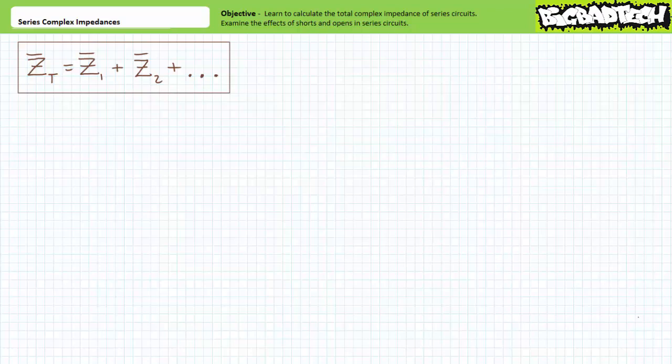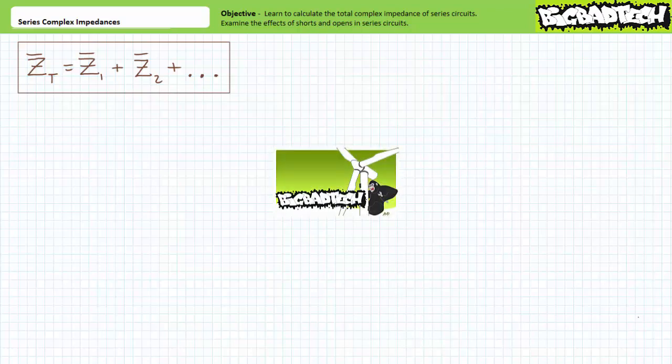Good day and welcome to Big Bad Tech. I'm your instructor Jim Pytel, and today's topic of discussion is series complex impedances. Our objective is to learn to calculate the total impedance of an inline or series arrangement of complex impedances. This lecture operates under the presumption the viewer has more than passing familiarity with complex number math and the calculation of resistive, capacitive, and inductive complex impedances as illustrated in the preceding lectures, available at the Big Bad Tech channel.